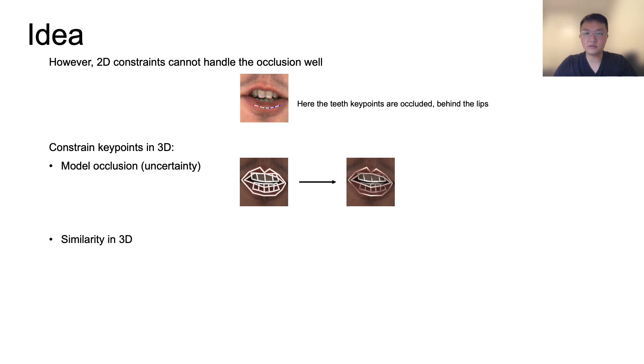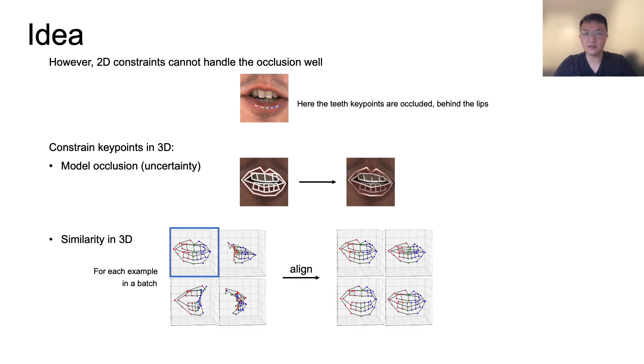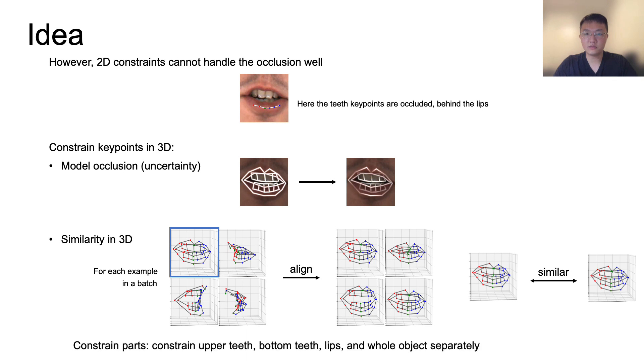Second, we assume objects in the same category have similar shapes. For each example in a training batch, we align all examples to the same pose using an estimated similarity transformation. Then we choose the most similar examples and minimize their differences. In addition to the whole object, we also constrain similarity between parts such as upper teeth, bottom teeth, and lips. This helps in modeling articulated objects.